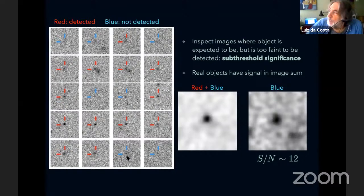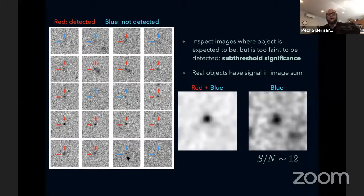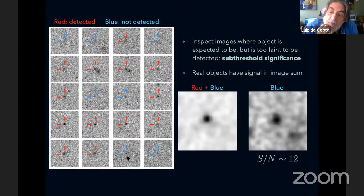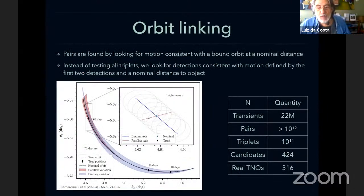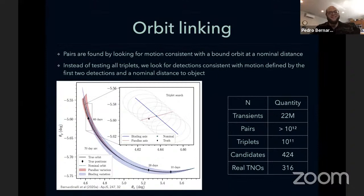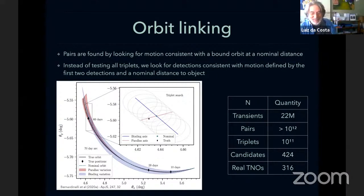Have you seen the recent work by Mario Juric on this linkage problem? His idea is based on the heliolinc package by Matt Holman. It's actually very similar to our ideas — if I understand correctly, they remap the entire parameter space into a 3D view with a given distance as well, working very similarly to our approach. He gave us a presentation that was very interesting. I should watch that recording.